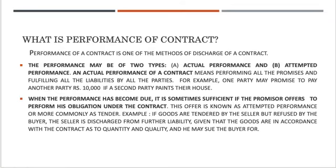An actual performance of a contract means performing all the promises and fulfilling all the liabilities by all parties. For example, one party may promise to pay another party rupees 10,000 if the second party paints their house.